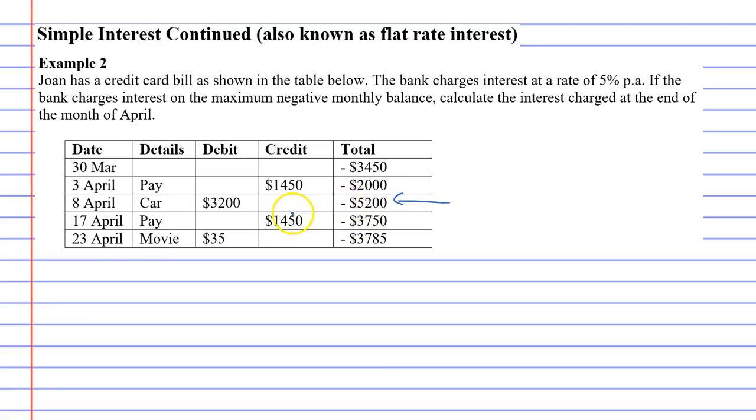So how are we going to do this? We're going to use our formula I equals PRN. We need to find P, R, and N. Our principal is the maximum amount they owed, which is $5,200. It's not necessary to put a negative in it.